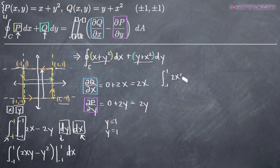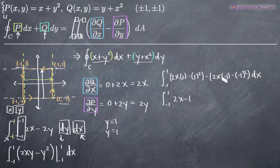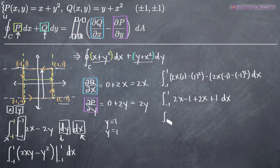We plug in the upper limit first: 2x times 1 minus 1 squared. Then we subtract what we get when we plug in negative 1: 2x times negative 1 minus negative 1 squared. Simplifying: we get (2x minus 1) minus (negative 2x minus 1), which gives us 4x. The constants cancel, and we're left with the integral of 4x dx from negative 1 to positive 1.